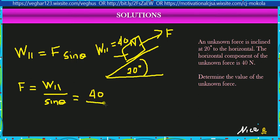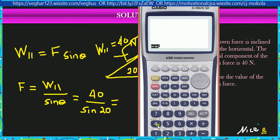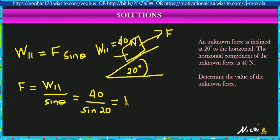Using a calculator, we get 40 divided by sine of 20, which equals 116.95 Newton. So this is the unknown force.